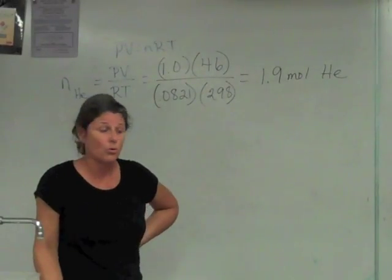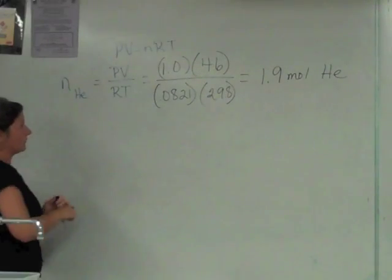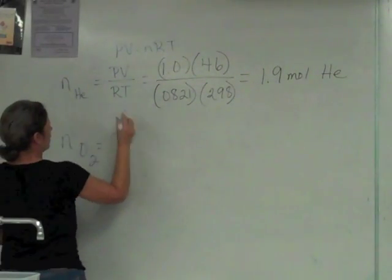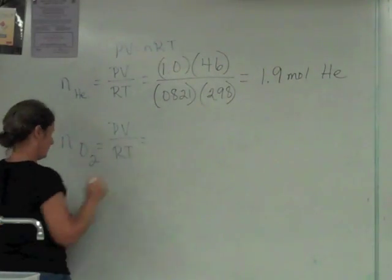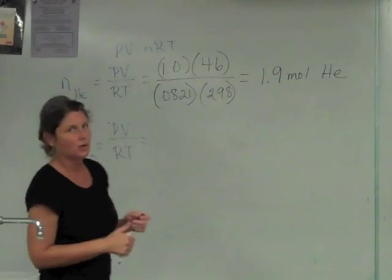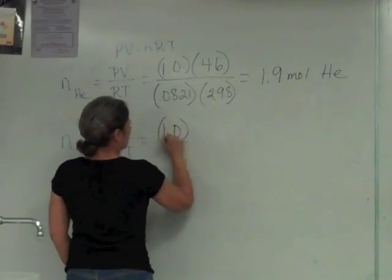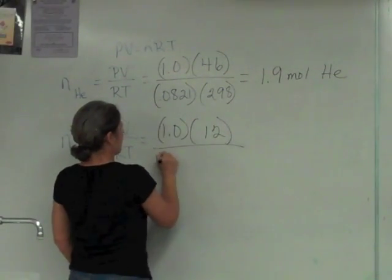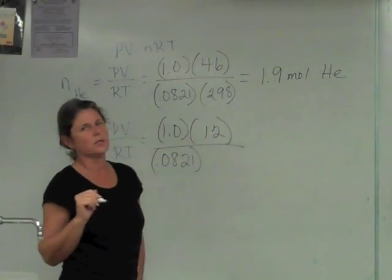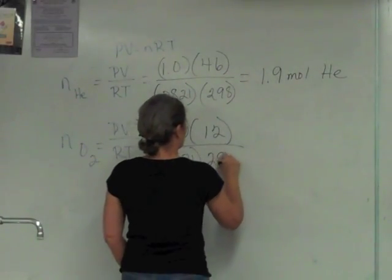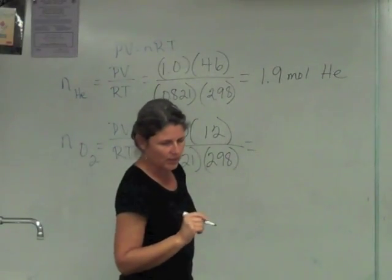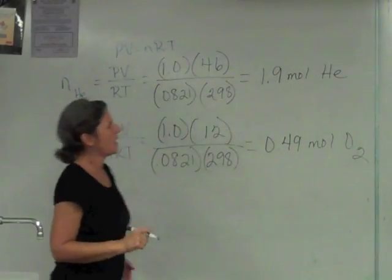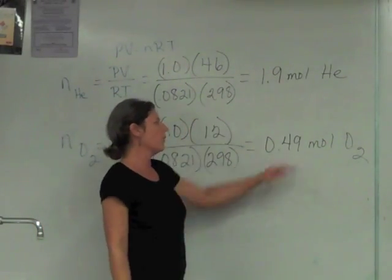So the next thing we need to know is how many moles of oxygen are getting pumped into this tank. Okay, so we have number of moles of O2. And again, I'm just going to rearrange this thing. Okay, what was the pressure of the O2? It was 1.0. Okay, how many liters of O2 did we have? We had 12 liters. We're going to use the same gas constant. And the temperature was the same, 25 degrees Celsius plus 273 is 298. Okay, and if we do this mathematics, what we're going to find is we have 0.49 moles of O2. So into this 5 liter tank, we are going to put 1.9 moles of helium and 0.49 moles of O2.